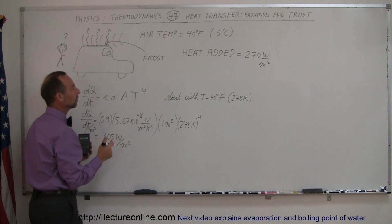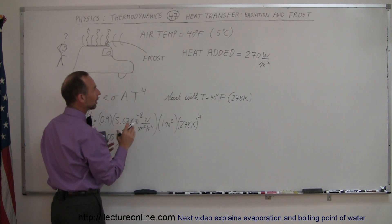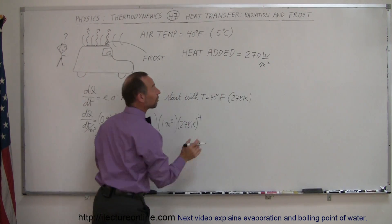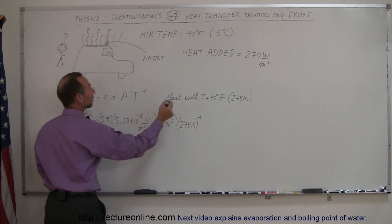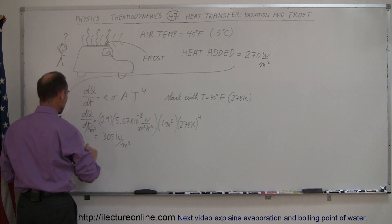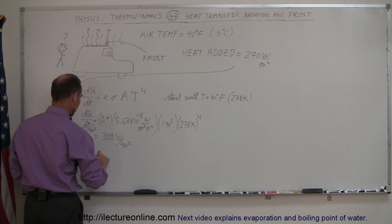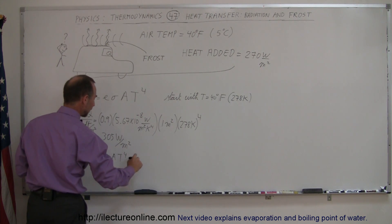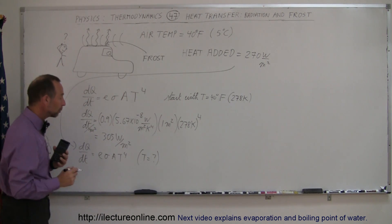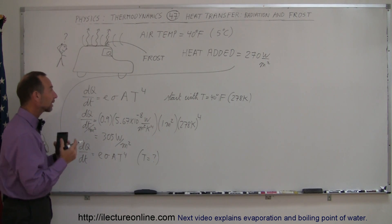Now we're going to find out what is the equilibrium temperature if the emitted energy is the same as the energy received from the air. We're going to plug this 270 into the dQ/dt, with it being equal to E sigma area times temperature to the fourth power, and find out what the temperature will be when we reach that equilibrium heat exchange.